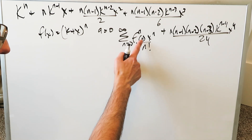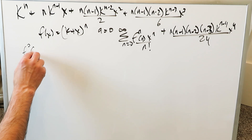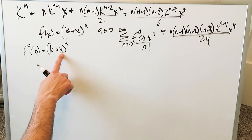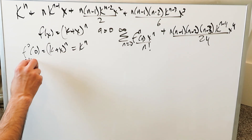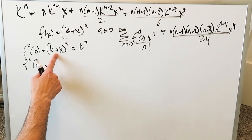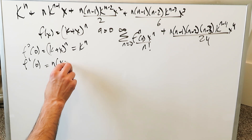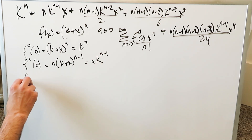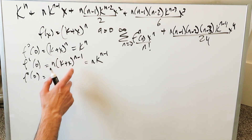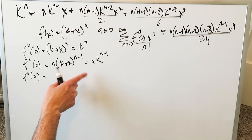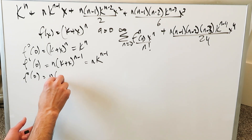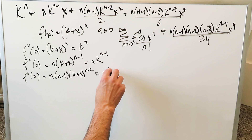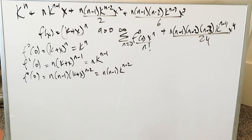We need to determine our derivative factors with 0 substituted in for x. The zero-order derivative is just the original function: putting x = 0 gives k^n. The first-order derivative: using the power rule on the composite function (k + x)^n gives n · (k + x)^(n−1); putting x = 0 gives n · k^(n−1). The second-order derivative: n(n−1) · (k + x)^(n−2); putting x = 0 gives n(n−1) · k^(n−2).